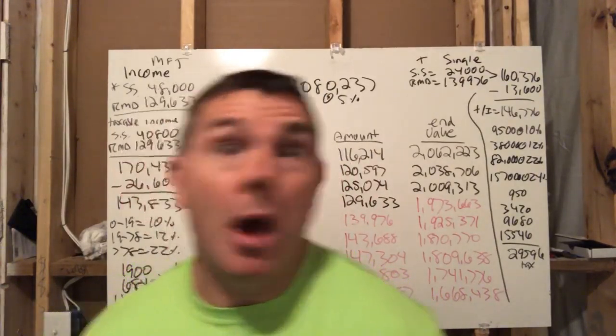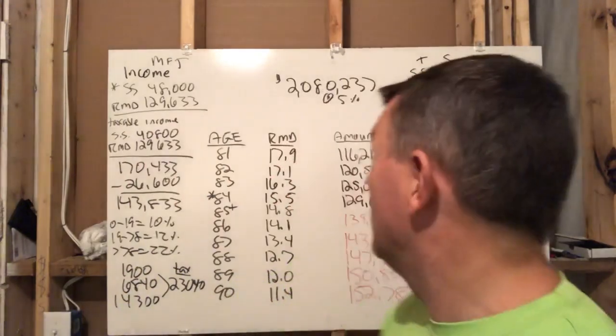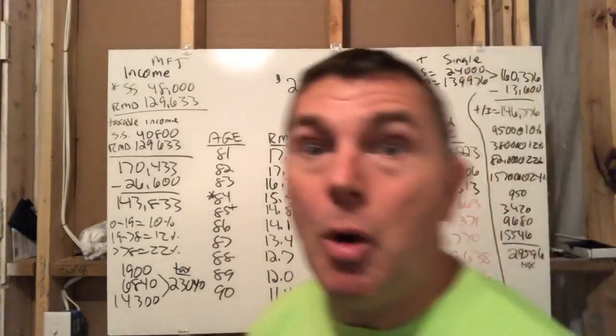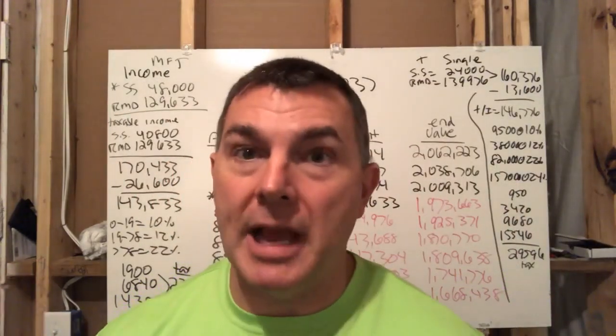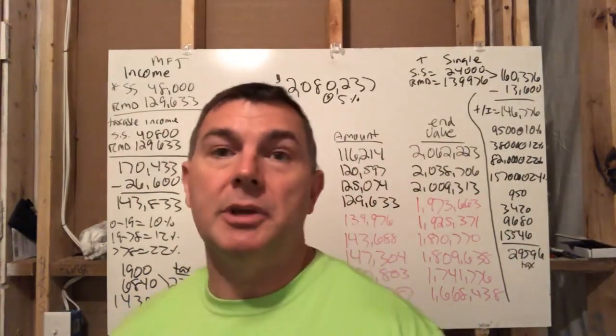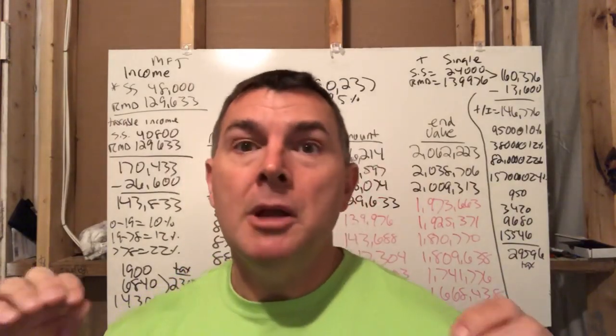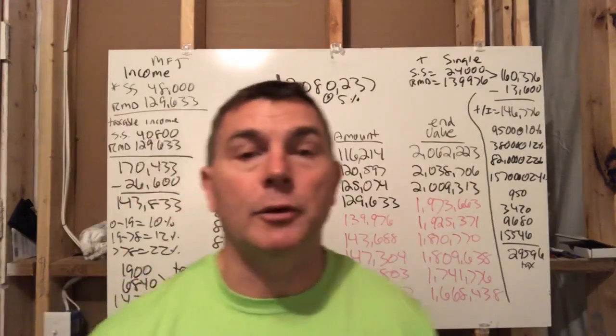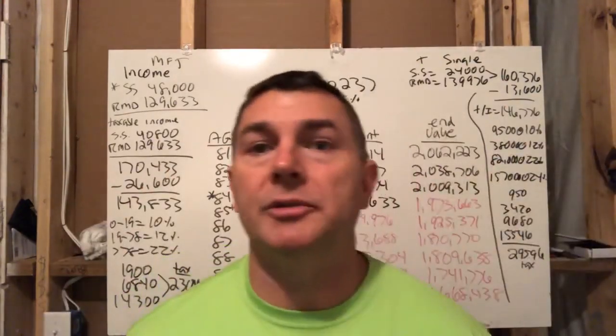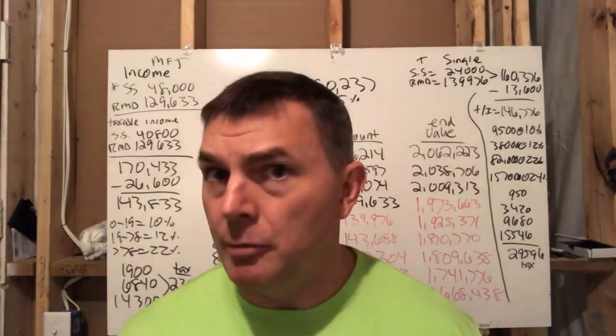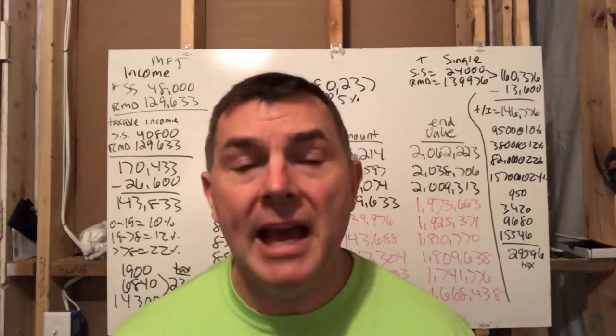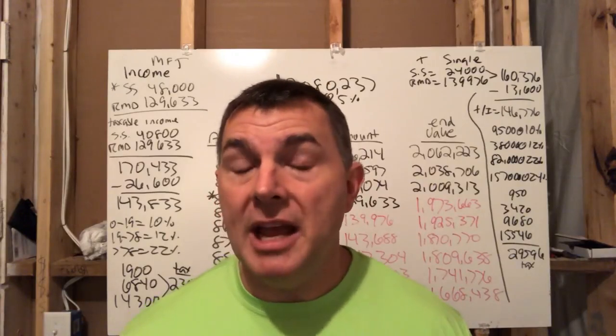We had our couple, Bob and Jane YouTube, and they hit 80 years old. They had 2.080 million in their deferred accounts - IRA, 401k, TSP, doesn't really matter, 403b. They had 2.08 million in there. Now, if this is the first time you watch, go back a few episodes because you'll see how he got 2 million and you're like, I don't have 2 million. I'm only 50 years old and I got 150,000.